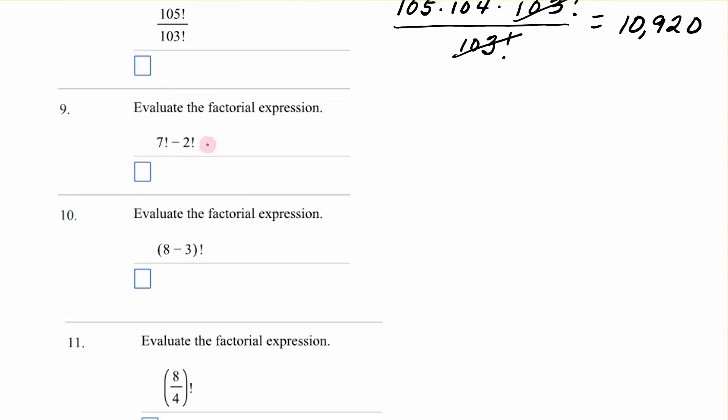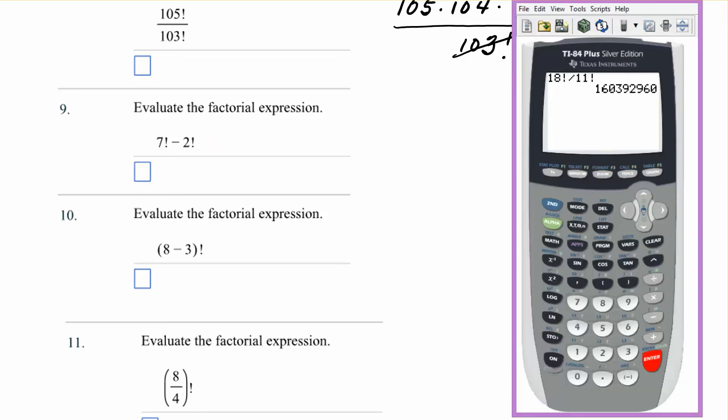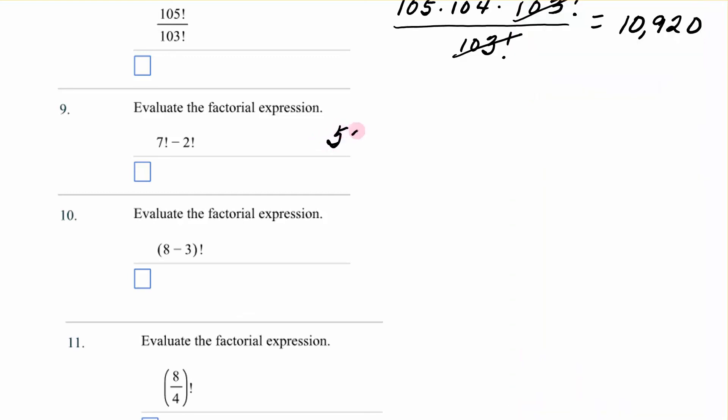All right. Number 9. I think I will use the calculator just to practice a little bit. 7 factorial minus 2 factorial. All right. 7 math, number 4. That is 7 factorial. Subtract 2 math, factorial. And I get 5,038. There was no shortcut to that because it was not division.